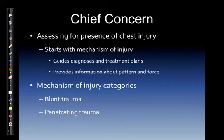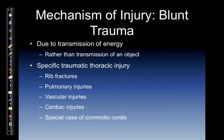There are two mechanism of injury categories: blunt trauma and penetrating injuries. Blunt trauma involves transmission of energy rather than transmission from an object, and is usually the result of a motor vehicle accident, a fall, or an assault. The energy from speed — kinetic energy equals mass times velocity squared — is delivered into the patient.